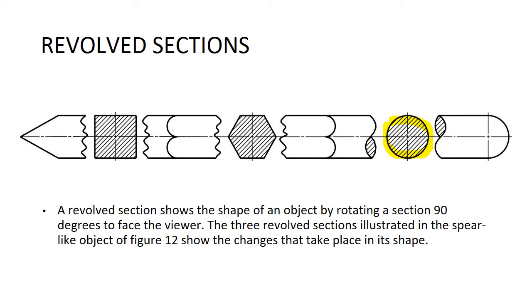Revolved sections. This is a piece that's got three different shapes. On the far left, we've got a square shape, then it transitions into a hexagonal shape, and then on the far right where I've got it outlined there in yellow, it's a circular shape. A revolved section shows the shape of an object by rotating a section 90 degrees to face the viewer. The three revolved sections illustrated in the spear-like object above show the changes that take place in its shape, it transitions. That's why we might have revolved sections.